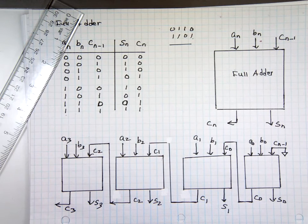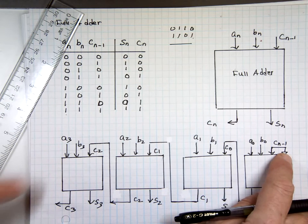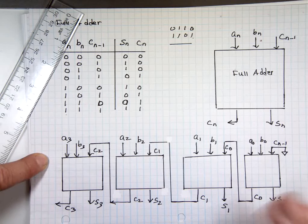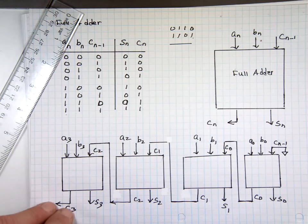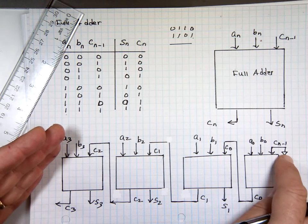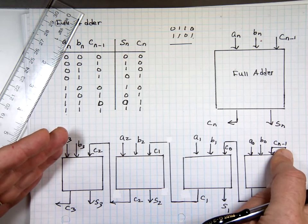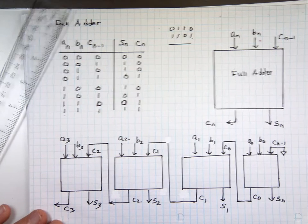So if you needed actually an 8-bit adder, you get two of these. But instead of grounding the next one, now you feed this to that input. And now you get an 8-bit adder. If you need 12, you get another four of them. You take the last carry and feed it to the carry right there.